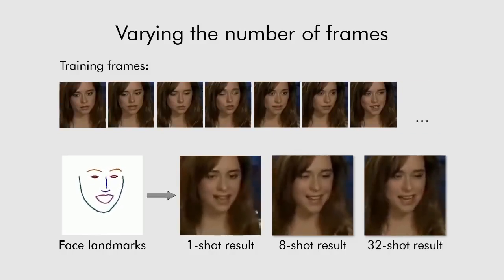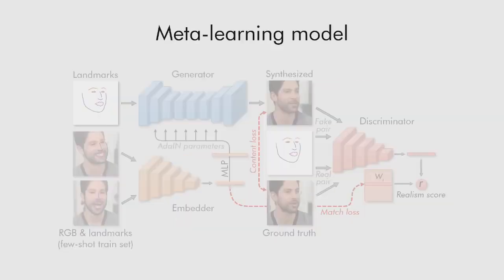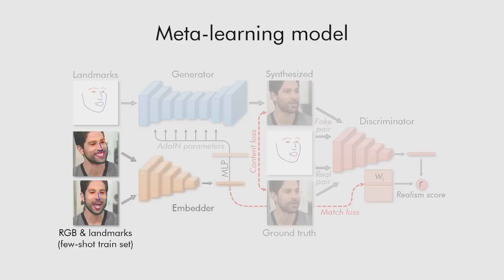Our approach uses a meta-learning stage which is performed on a huge dataset of videos. For the results in this presentation, the VoxCeleb2 dataset is used. Three networks are trained during the meta-learning stage. The embedder network maps frames concatenated with the landmarks into vectors containing pose-independent information.